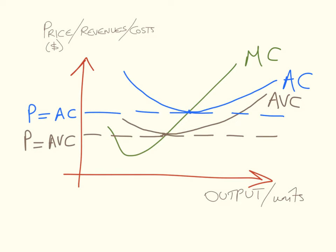What do these two concepts look like in diagrammatical form? If we plot the cost and revenue curves — with price, revenues, and costs on the vertical axis and output on the horizontal axis — the shutdown price is where price equals average variable cost (P = AVC) in the short run, giving us the shutdown level of output. In the long run, the break-even price is where the marginal cost curve intersects the average cost curve, giving us the break-even level of output.